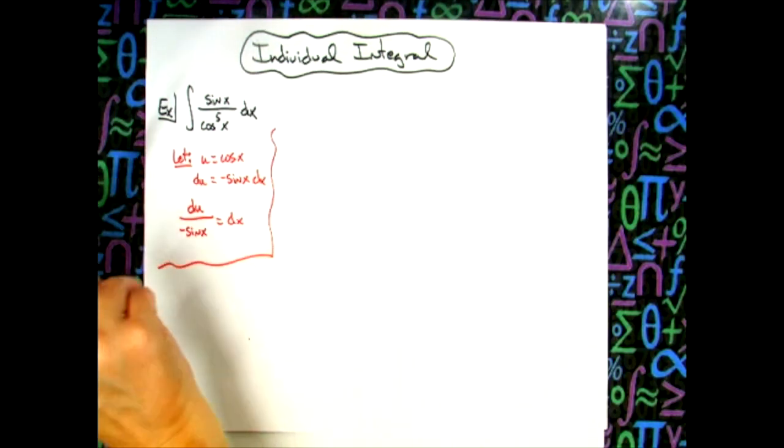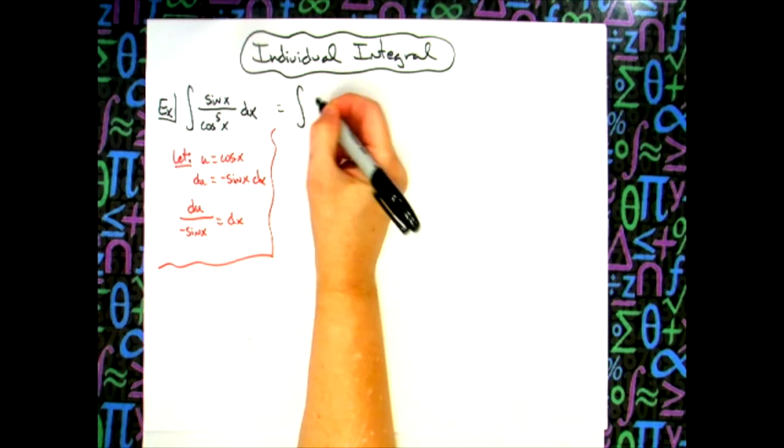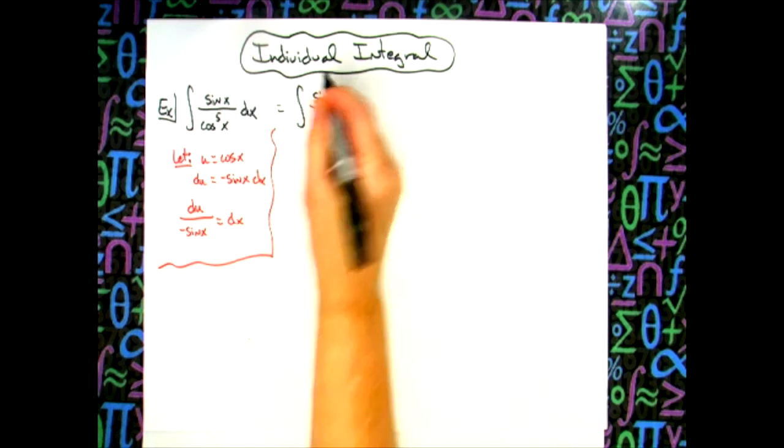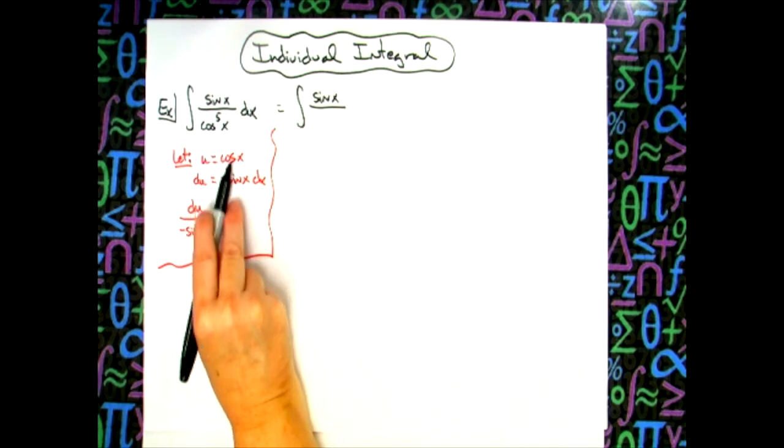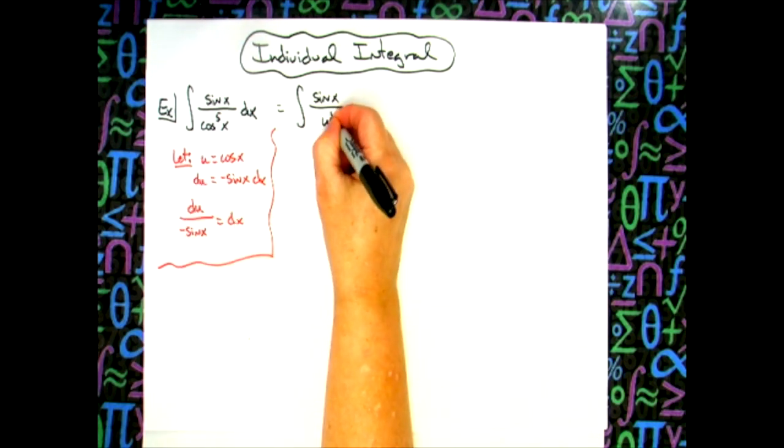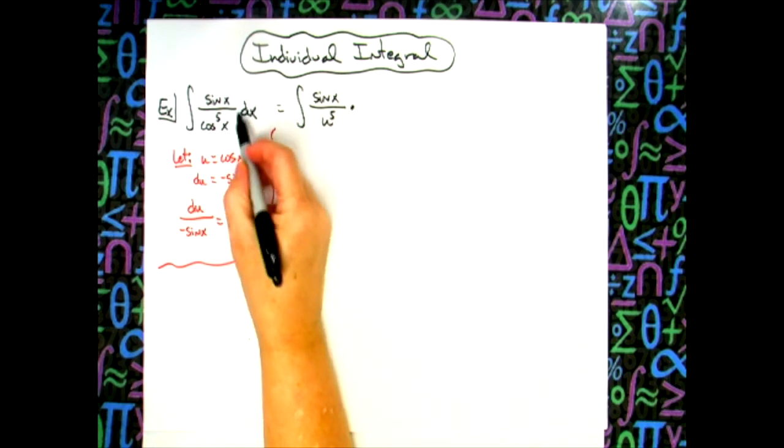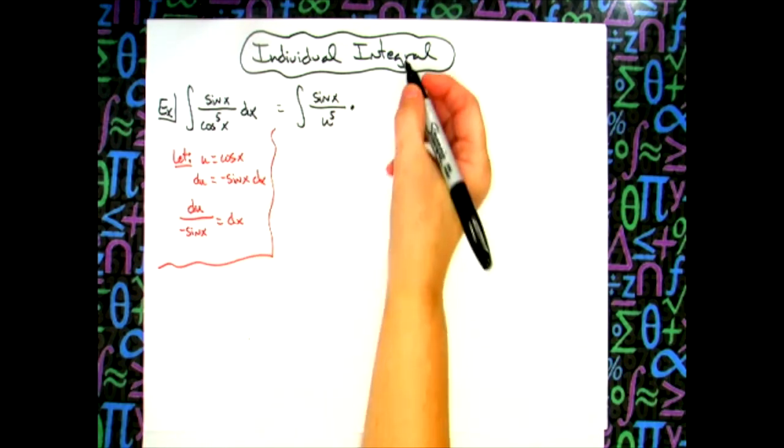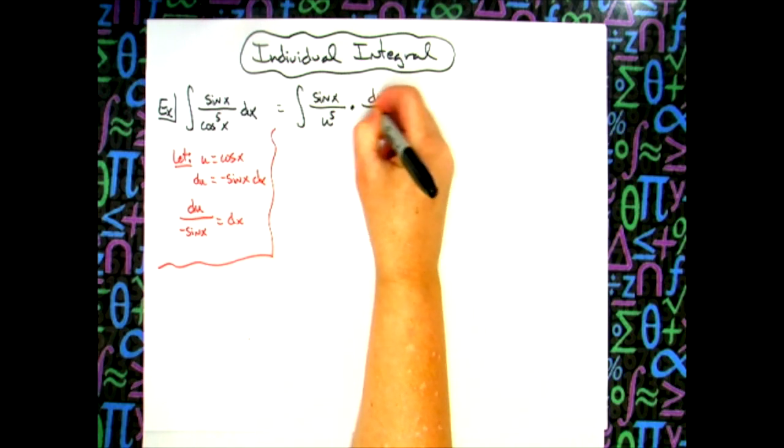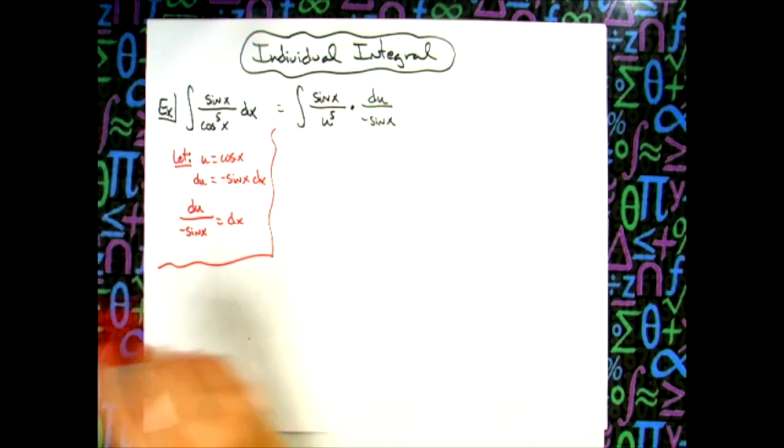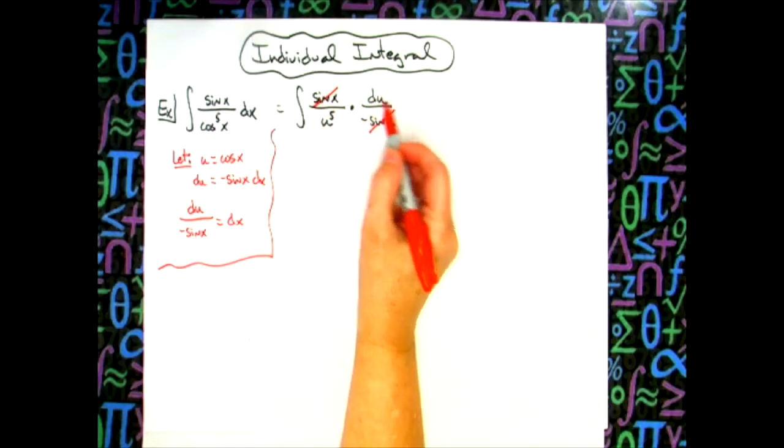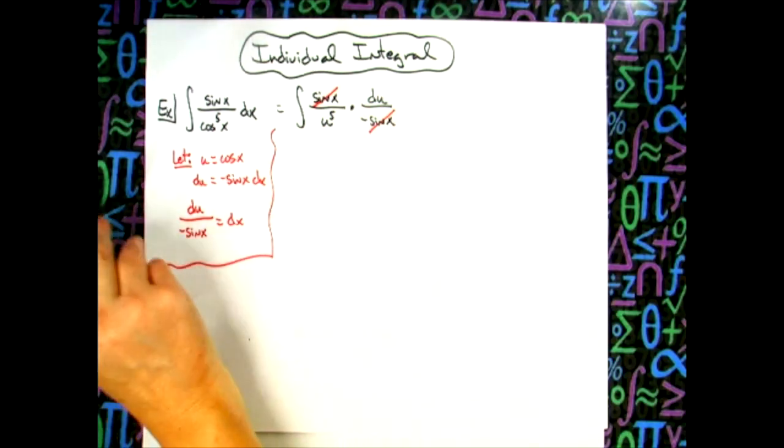Then we're going to come up and start doing some substitutions. We'll still have our integral sign, we're going to leave sine x in that numerator, we're going to replace the cosine with u and make that u to the fifth on the bottom. We're going to take this dx and replace it with the du over negative sine x. What that's going to allow us to do is cross out those signs which is what we want, and then we are all in terms of u which is where we need to be.